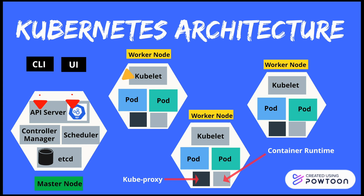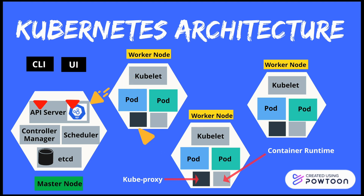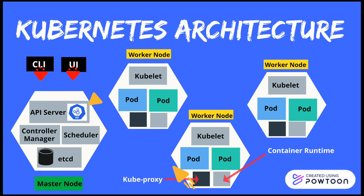The worker node is where deployed applications run. It consists of three processes. First, the container runtime, which must be present to pull images from the container image registry and to start or stop pods — Docker is the common platform. Second, kubelet: every worker node has a kubelet to communicate with the master node, receiving requests from the scheduler and creating pods. Third, kube-proxy, a network proxy that allows communication to pods and handles routing and traffic load balancing. All three processes must be present in each worker node for it to function perfectly.